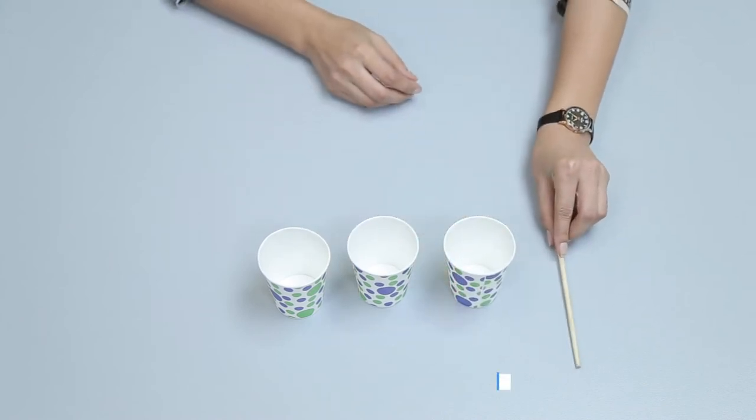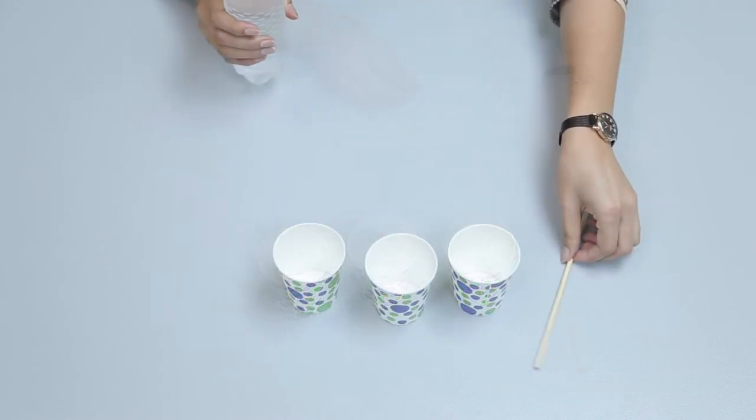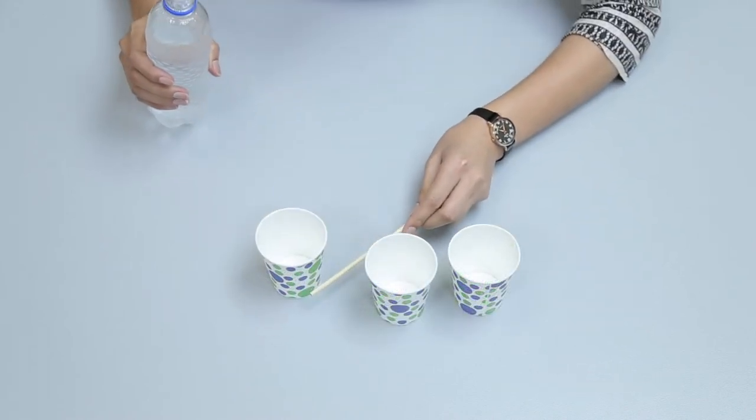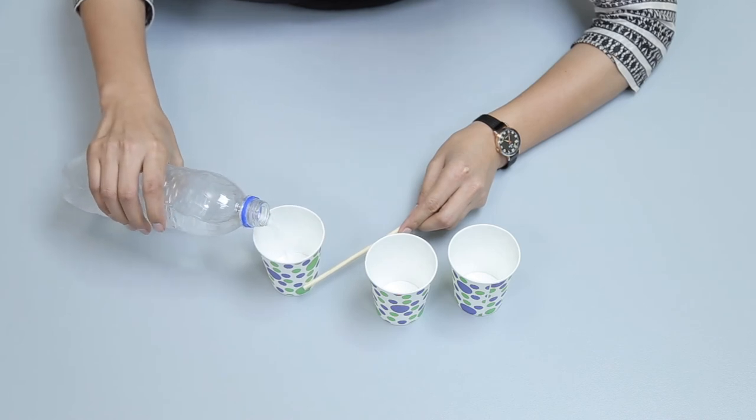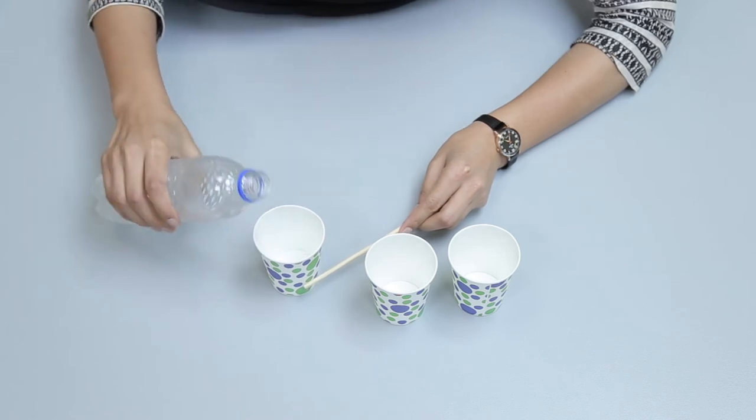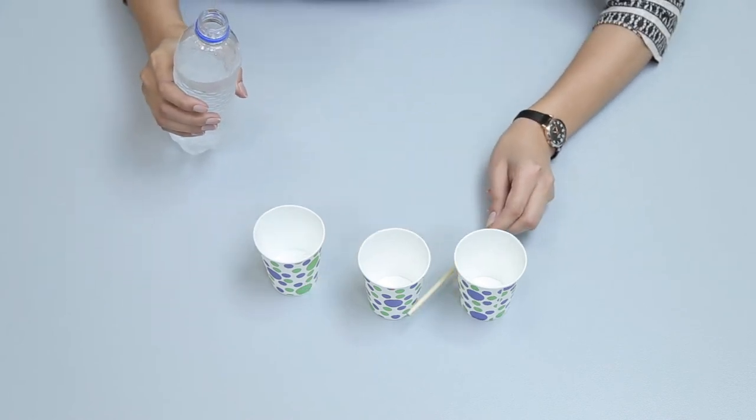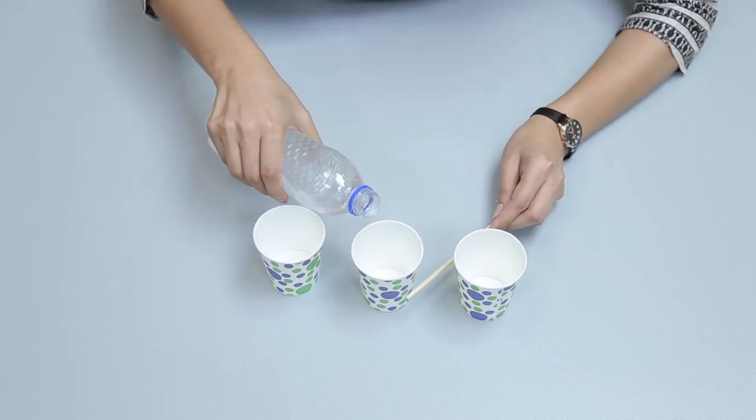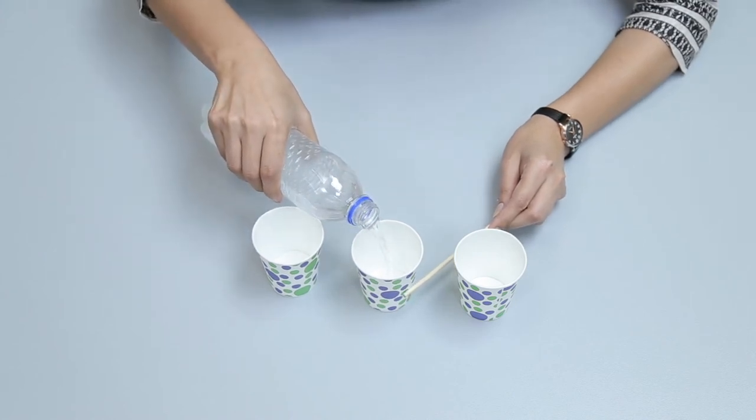For this, take three glasses and fill each glass with different proportions of water. Fill one paper cup one quarter full with water. Fill one paper cup half full with water.